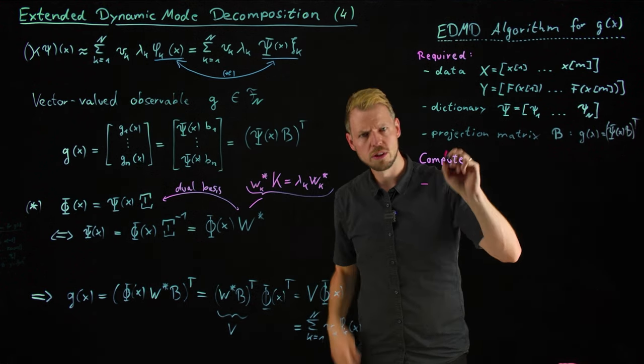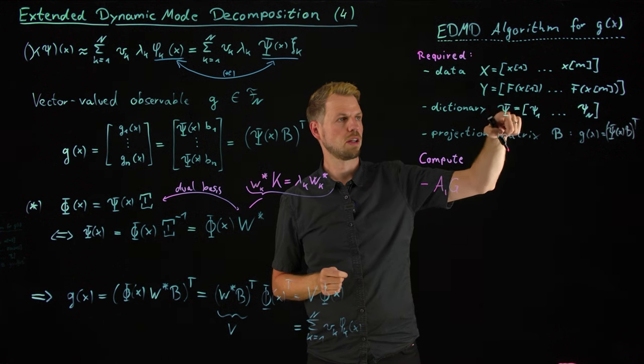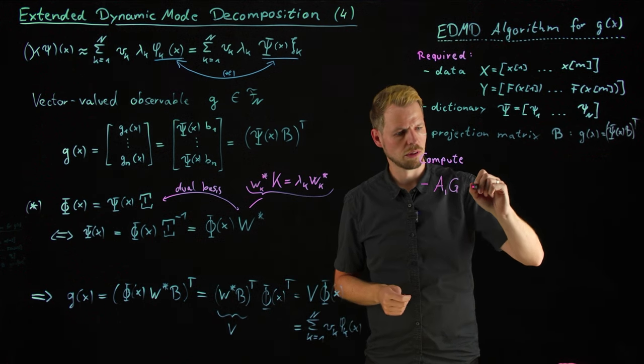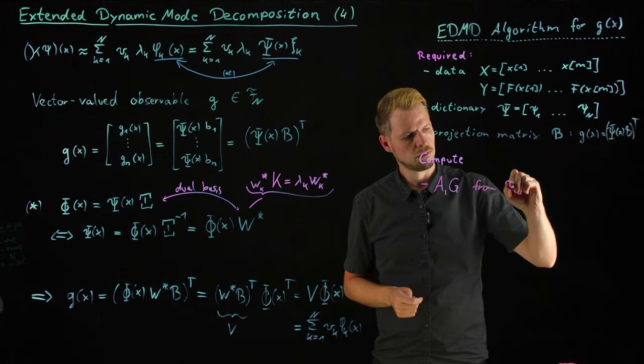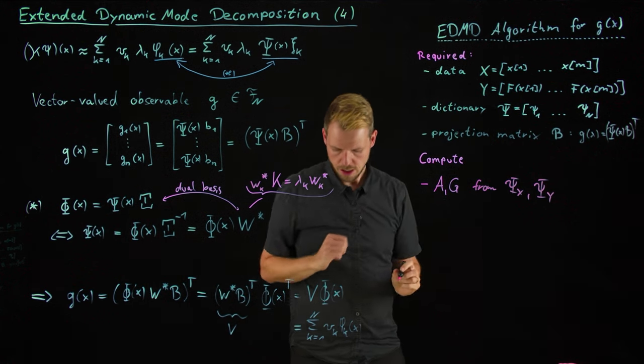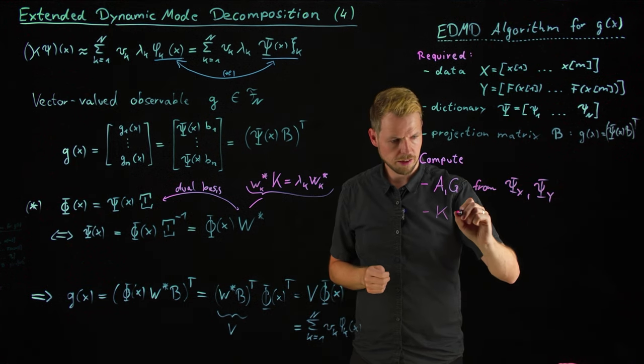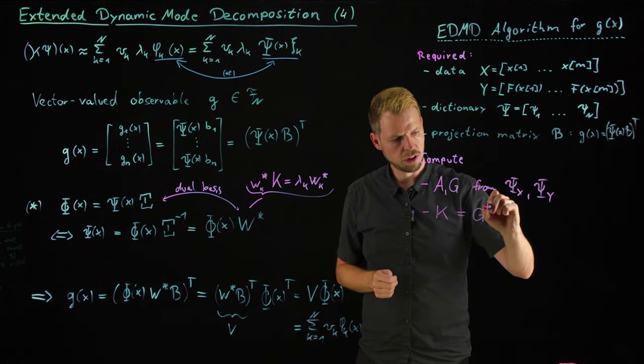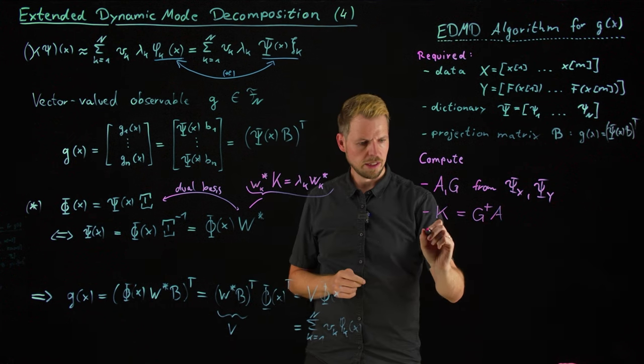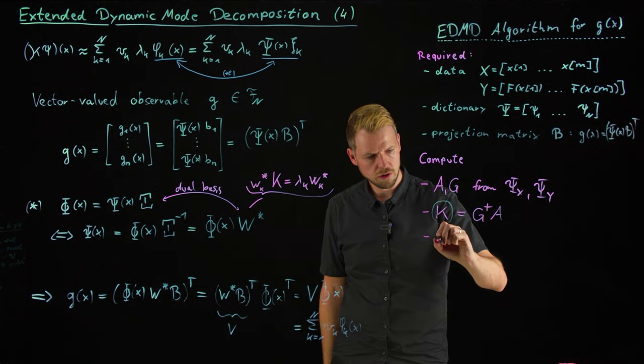So this is what we need: data, a dictionary, the projection matrix, and all of what we are going to do now is in the subspace spanned by these basis functions. And the choice of the subspace obviously is very important in terms of this approximate sign. So what do we compute? We compute these A and G matrices. We take the data, we lift it into psi of x. So we need psi x and psi y. We lift our data in terms of the dictionary. And then we compute our K matrix simply as the pseudo-inverse of G times A. So a simple linear regression problem as we have seen it numerous times now.